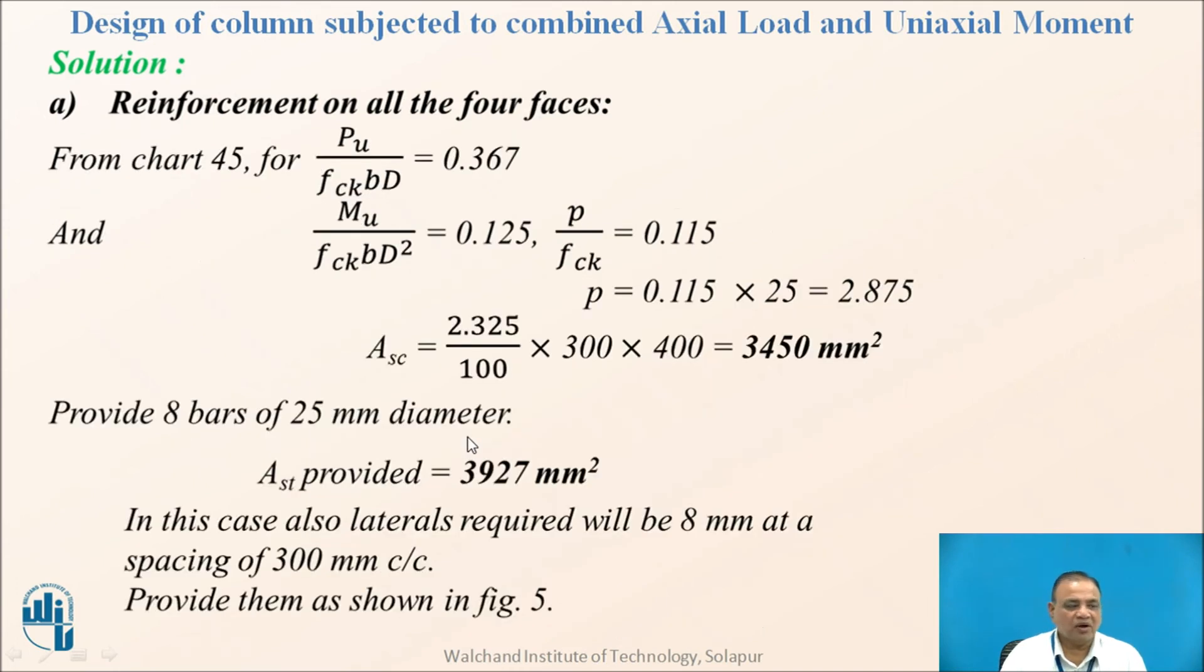Now, if we provide on four faces, then the reinforcement on all four faces, you will find the corresponding chart will be chart number 45. P upon FCK BD and MU upon FCK BD square is already calculated. P upon FCK if you just determine from the chart it works out to be 0.115 percent. We have taken the percentage steel works out to be 2.875 because it is P by FCK value.